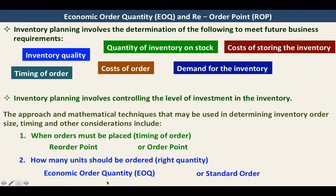When we use these mathematical techniques — the reorder point and economic order quantity — we will be able to address the quantity of inventory in stock, the cost of storing the inventory, the cost of order, the demand for the inventory, and the timing of order. Inventory quality is very subjective, so it depends on the company to measure what quality of inventory they need, and it will not reflect in these two mathematical techniques.